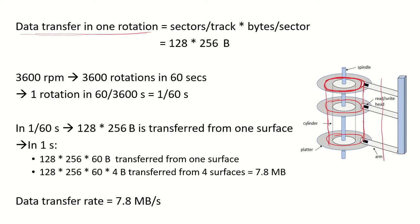So let's talk about one track first. In one track the data that is transferred is the number of sectors per track into bytes per sector which is 128 into 256 bytes. So this much data will be transferred from one track in one rotation.